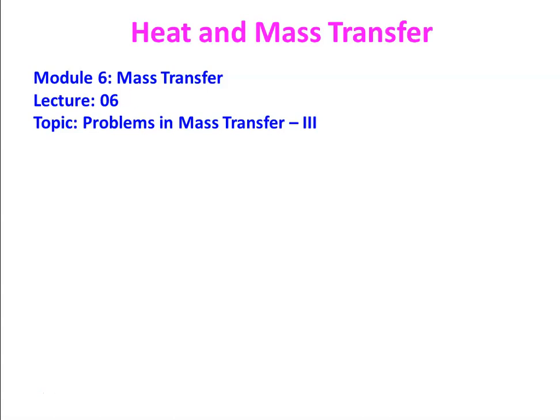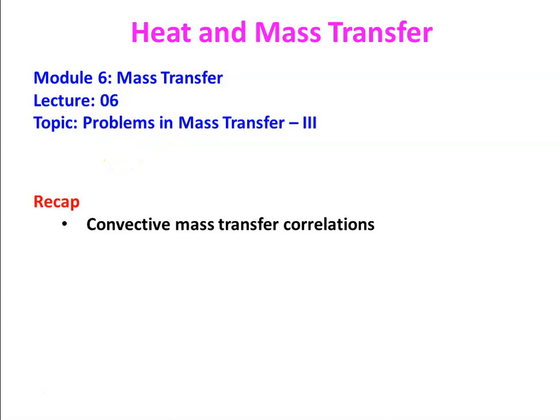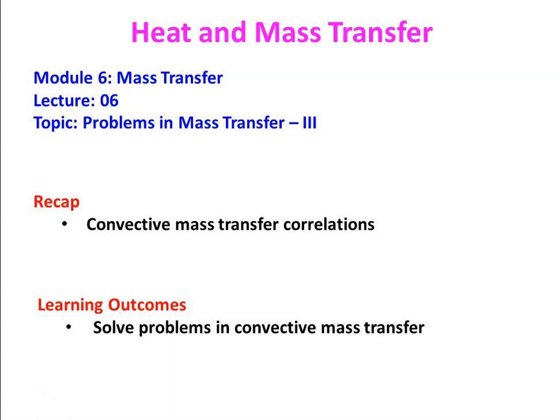Today the lecture is lecture number 6 on the module mass transfer. We will be solving problems in the mass transfer part 3 and recap the convective mass transfer correlations for internal flow and external flow, discussing various equations — Sherwood number as a function of Reynolds number and Schmidt number. The learning outcome: at the end of this lecture the student will be able to solve problems in convective mass transfer.